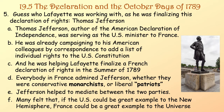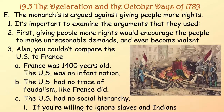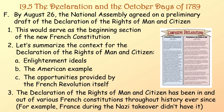Everybody in France admired Jefferson, whether they were conservative monarchists or liberal patriots. Jefferson actually helped to mediate between the two parties. Many felt that if the U.S. could be a great example to the Western Hemisphere, then France could be a great example to the universe. The monarchists argued against giving people more rights. They said it would encourage unreasonable demands and even violence. They also said you couldn't compare the U.S. to France — France was 1,400 years old, an infant nation had no feudalism and no social hierarchy, if you're willing to ignore slaves and Indians.